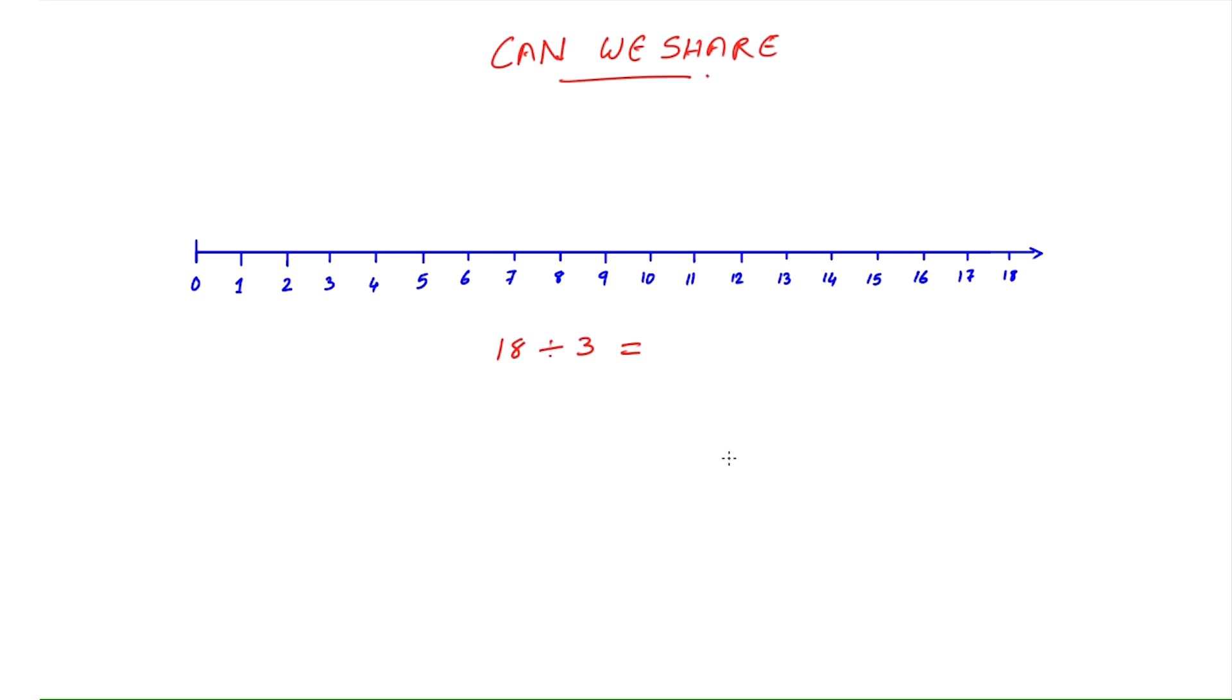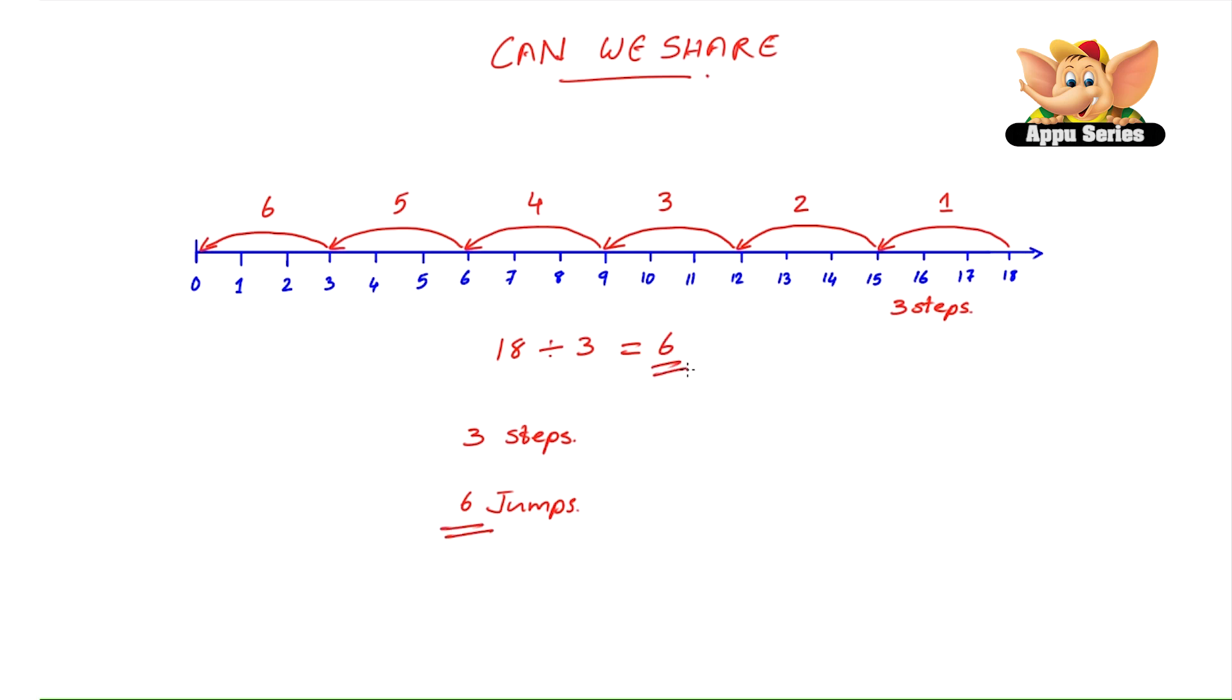Now let's show the problem 18 divided by three on the number line. So when we were dividing these candies before, we were subtracting three candies each time. Starting from the number 18, let's jump back three numbers each time until we reach zero. So are you ready? Let's go. So this is the first jump, second jump, third jump, fourth jump, fifth jump, and sixth jump. So there's six jumps. So 18 divided by three equals six.